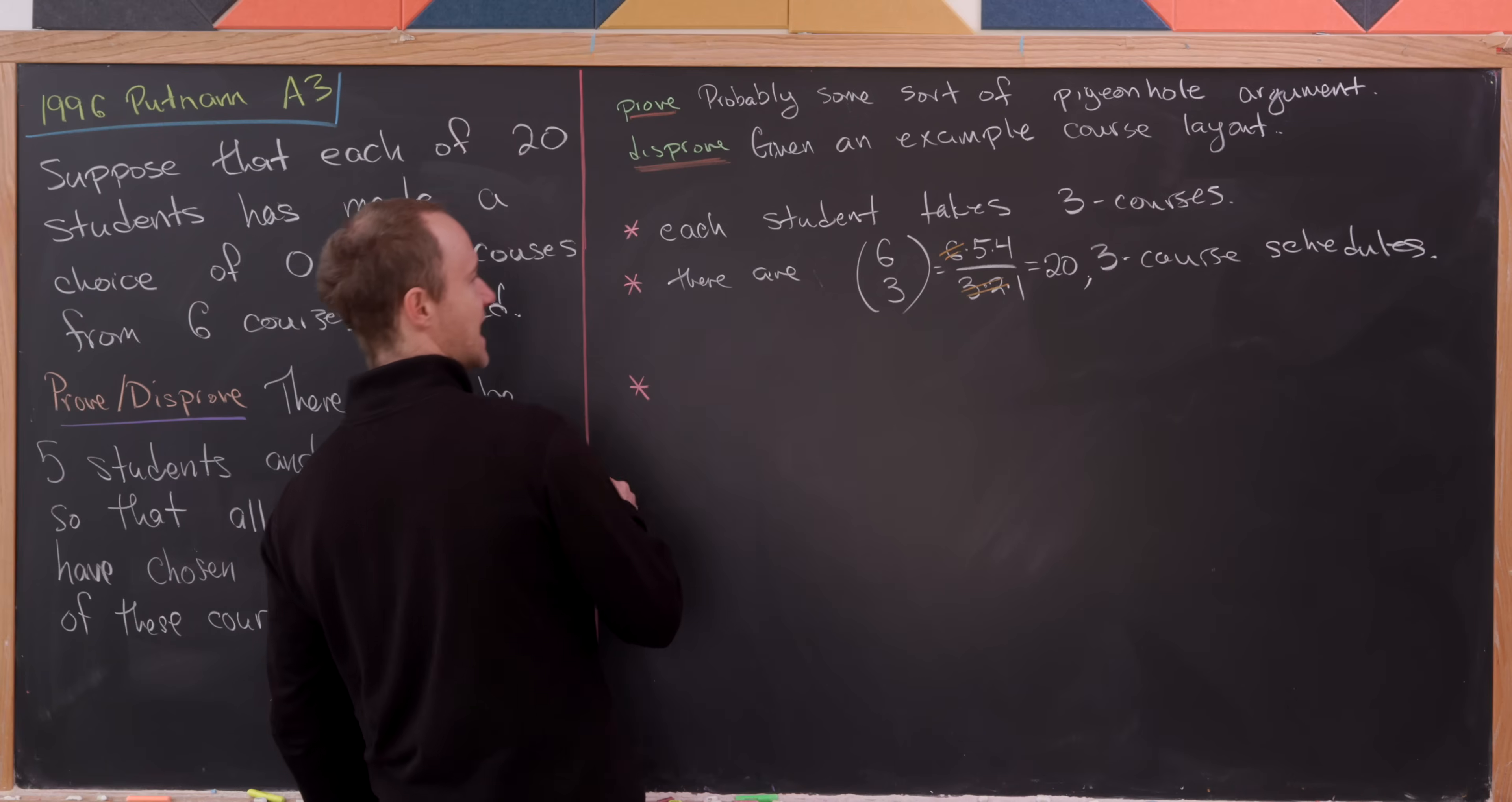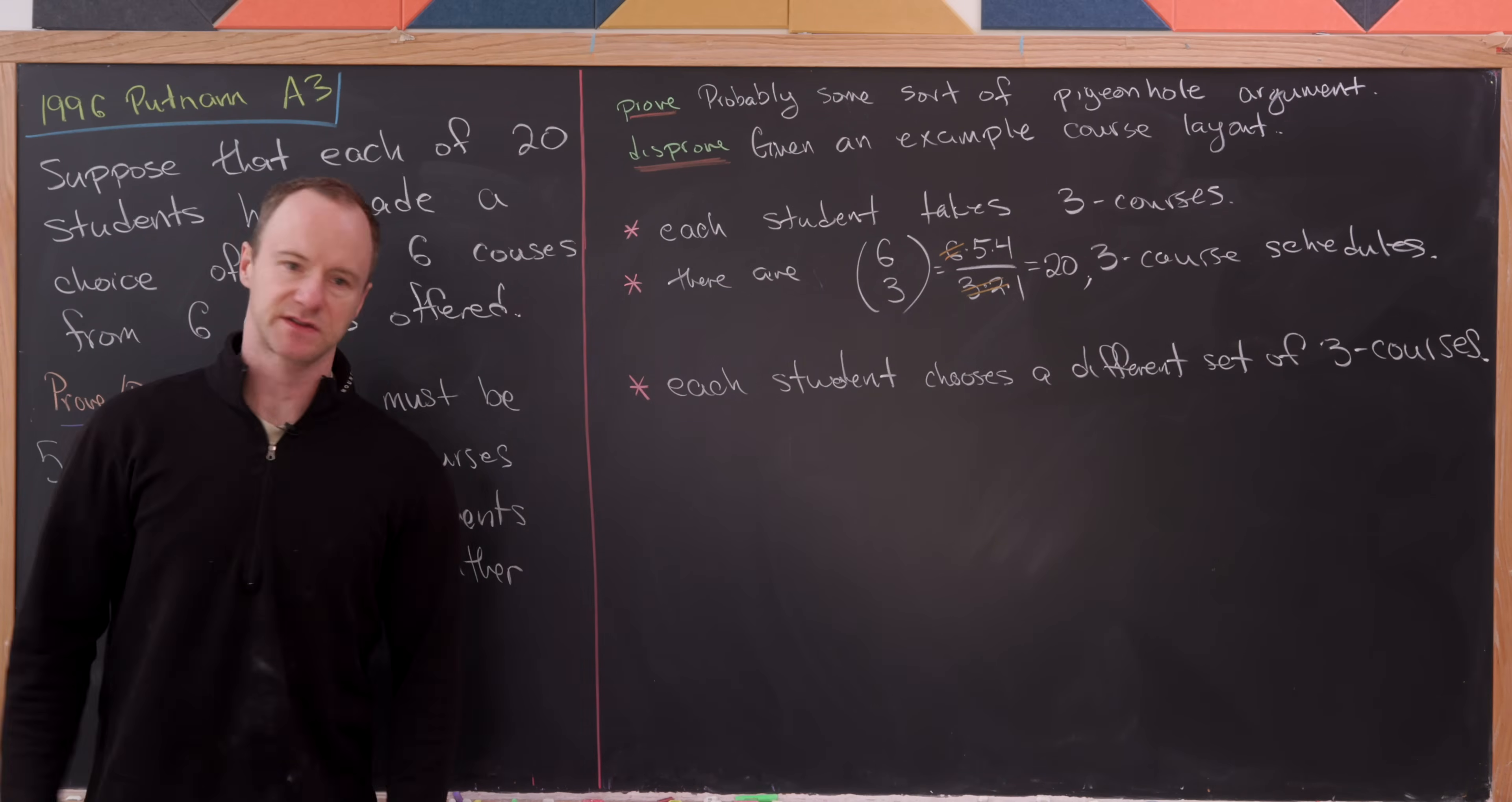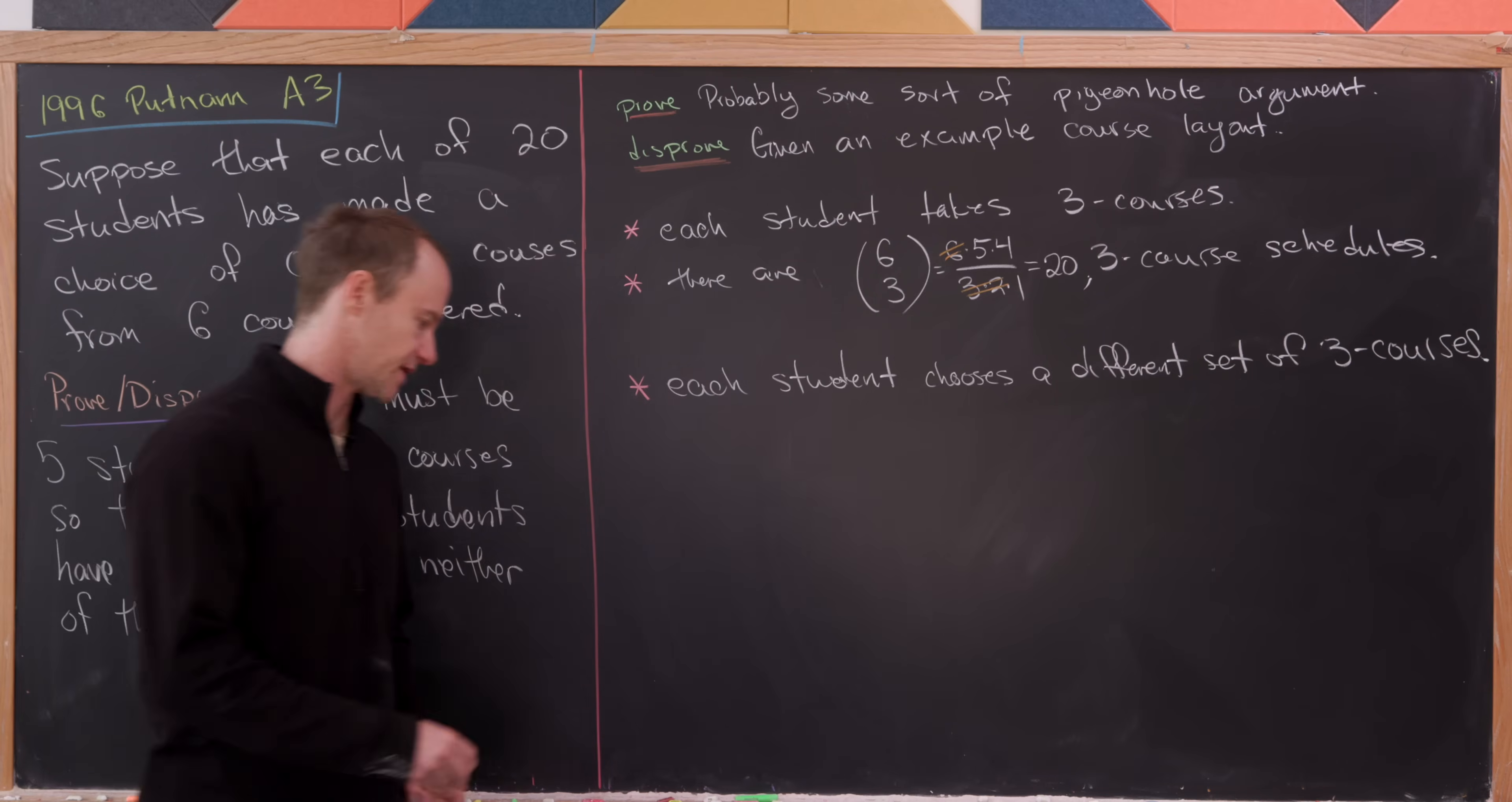So let's say each student chooses a different set of three courses. And since 20 isn't really that big, I think we could probably just do this very explicitly and see exactly what's going on here.